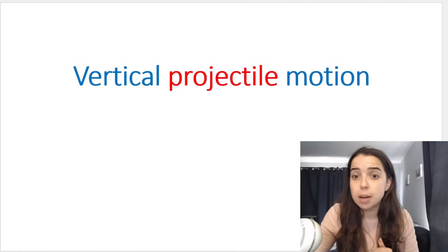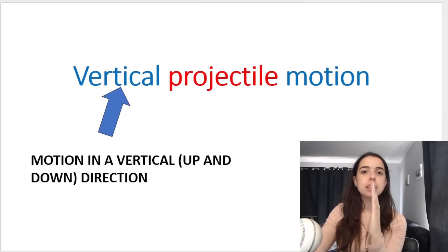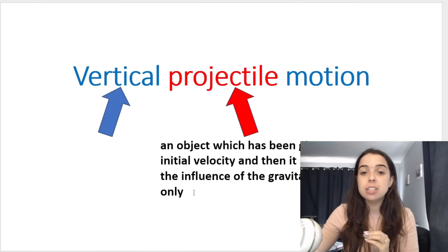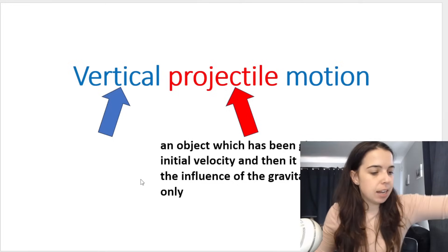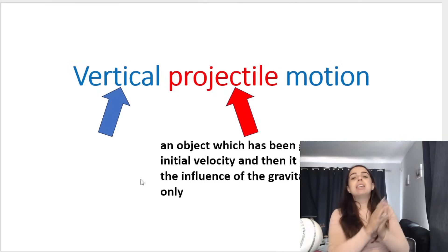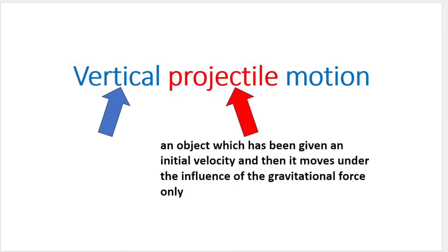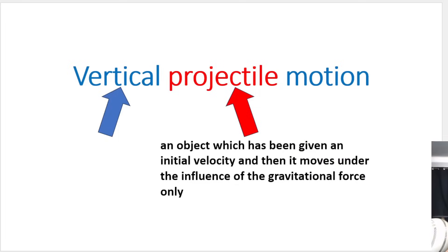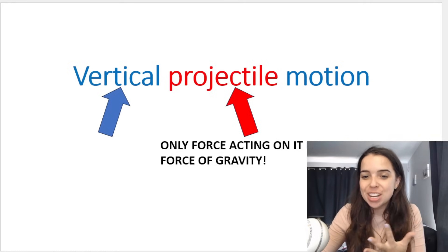Now, vertical projectile motion — what is this topic about? The name kind of says it all. Vertical means we're looking at motion up and down, along the Y-axis. Projectile — here is the official definition: an object which has been given an initial velocity and then moves under the influence of gravitational force only. So if I take a pen and throw it up, I've given it an initial velocity; it becomes a projectile. That point is so important: only the force of gravity is acting on this object. And we're dealing with motion, which means we'll be using equations of motion and graphs of motion.